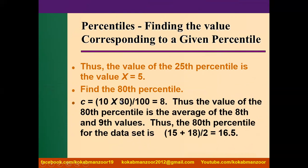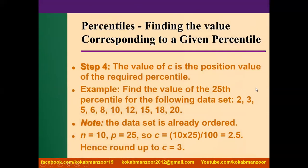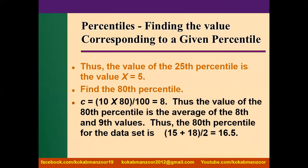Similarly, for the 80th percentile: C = 10 × 80 ÷ 100 = 8. Since 8 is a whole number, we take the average of the 8th and 9th values. The 8th value is 15 and the 9th value is 18. So: (15 + 18) ÷ 2 = 16.5. This means that a person scoring 16.5 is performing better than 80 percent of the entire class — they are at the 80th percentile.